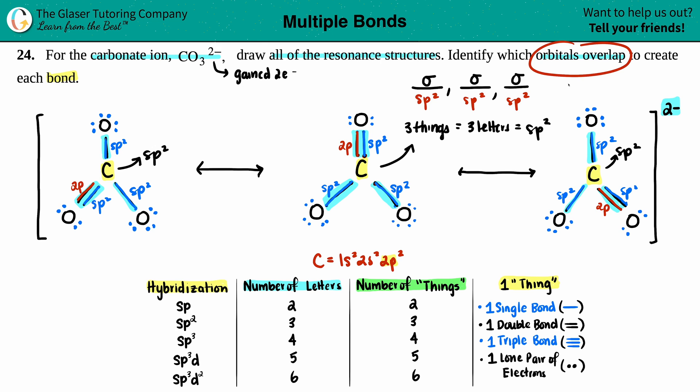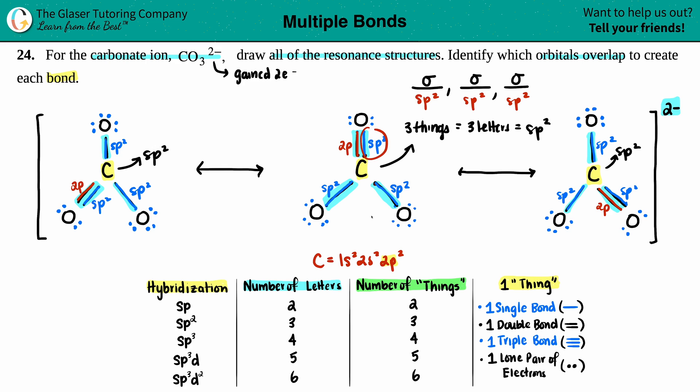So to summarize: identify which orbitals overlap — for all of the single bonds, it's your hybrid SP2 orbital. For your double bond, one component is the SP2 hybrid sigma bond, and the other is the reserve 2p orbital forming the pi bond. I hope that helps. Thank you so much for watching the video. Let's keep studying hard, keep working hard, and I will talk to you all in the next lesson. Have a great day. Bye-bye.